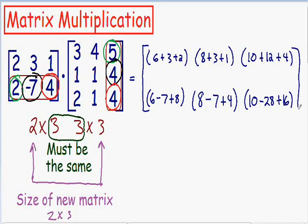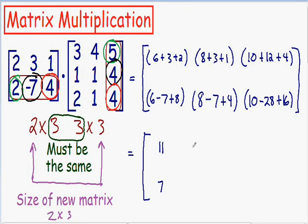These problems can get pretty long and tedious, but now we have multiplied every row from the first matrix with every column from the second matrix. The only thing left is to simplify by adding all these numbers together. Top left: 6 plus 3 plus 2 is 11. Bottom left: 6 minus 7 is negative 1, and negative 1 plus 8 is positive 7. Second column top: 8 plus 3 is 11, and 11 plus 1 is 12. Second column bottom: 8 minus 7 is positive 1, and 1 plus 4 is 5. Top right: 10 plus 12 is 22, and 22 plus 4 is 26. Bottom right: 10 minus 28 is negative 18, and negative 18 plus 16 is negative 2. This is our final answer — we have completely multiplied these two matrices together.